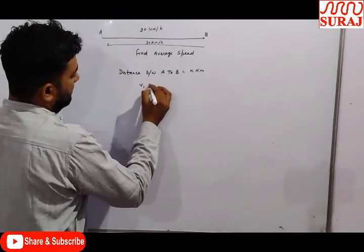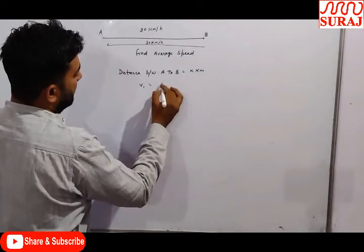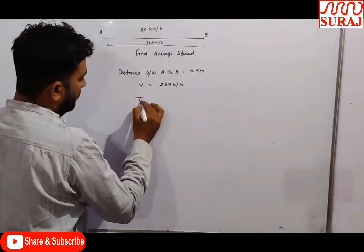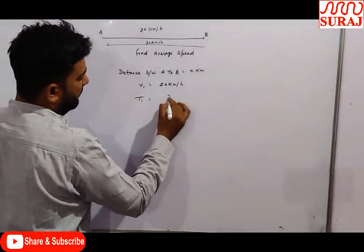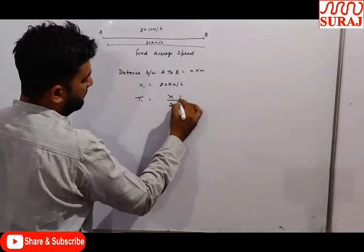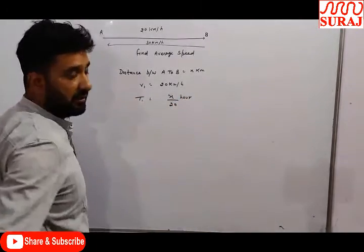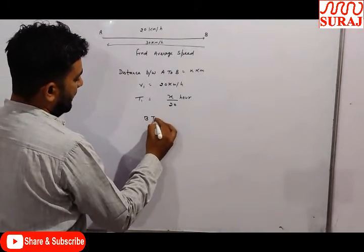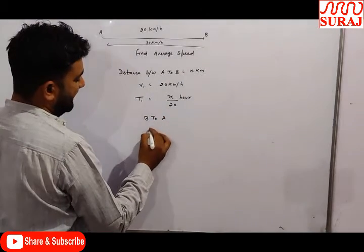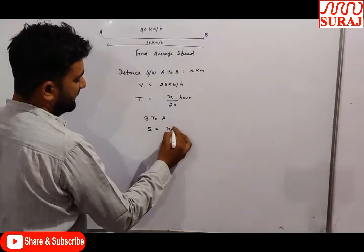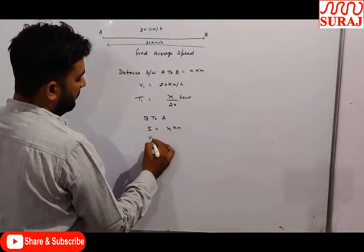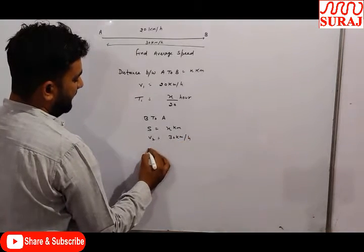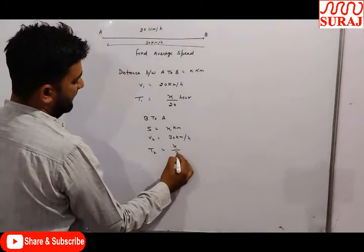Speed from A to B is 20 km per hour. Time t1 equals distance upon speed, so t1 equals x by 20 hours. Similarly, in the second case B to A, the distance is x kilometers and speed v2 is 30 km per hour, so t2 equals x by 30 hours.